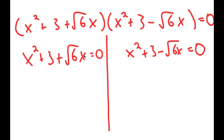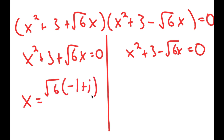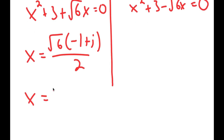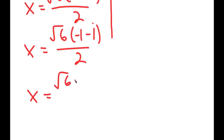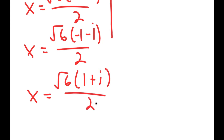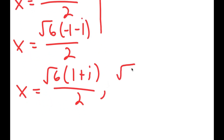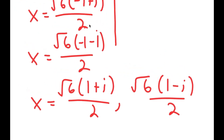This gives me two equations: x squared plus 3 plus the square root of 6 times x equals 0, and x squared plus 3 minus the square root of 6 times x equals 0. Because both of these are quadratic equations, you can use the quadratic formula to solve them. You should get that x equals the square root of 6 times negative 1 plus i over 2, x equals the square root of 6 times negative 1 minus i over 2, x equals the square root of 6 times 1 plus i over 2, and x equals the square root of 6 times 1 minus i over 2. So these are your four solutions.